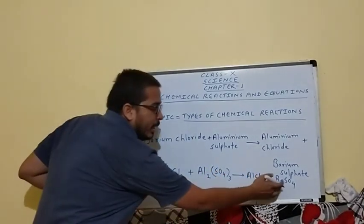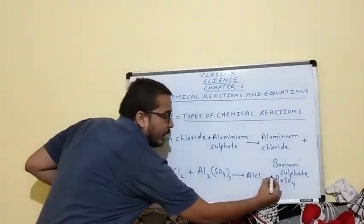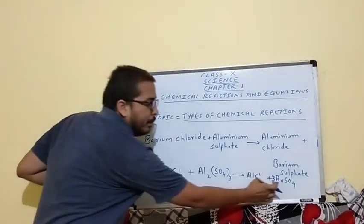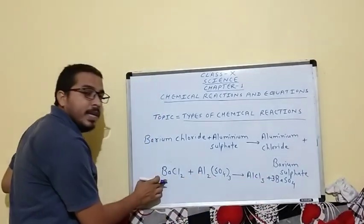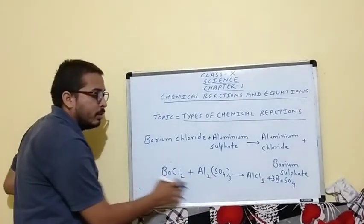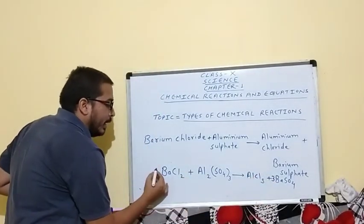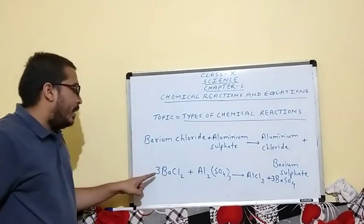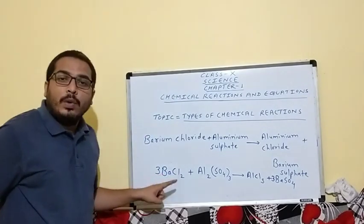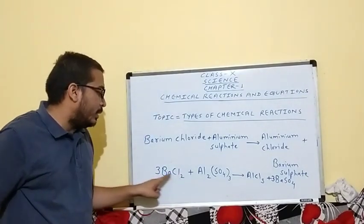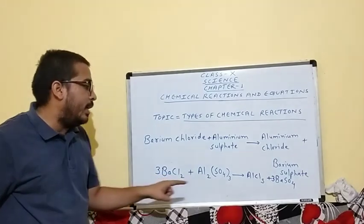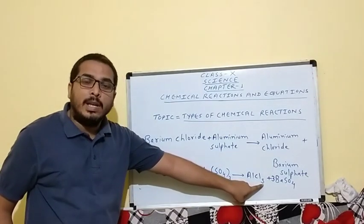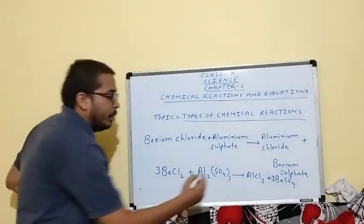Three sulphate ions are present on the left, so we multiply BaSO4 by 3 on the right. Barium becomes 3 on the right, but barium is 1 on the left, so we multiply by 3 on the left-hand side. Now chlorine becomes 3 × 2 = 6 on the left, but we only have 3 chlorine on the right, so we multiply AlCl3 by 2.